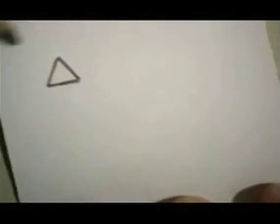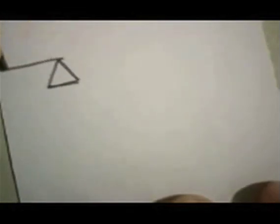The first simple machine that we're going to draw is a lever. It starts with a triangle, and up on top, there's just a piece of wood or metal or something.